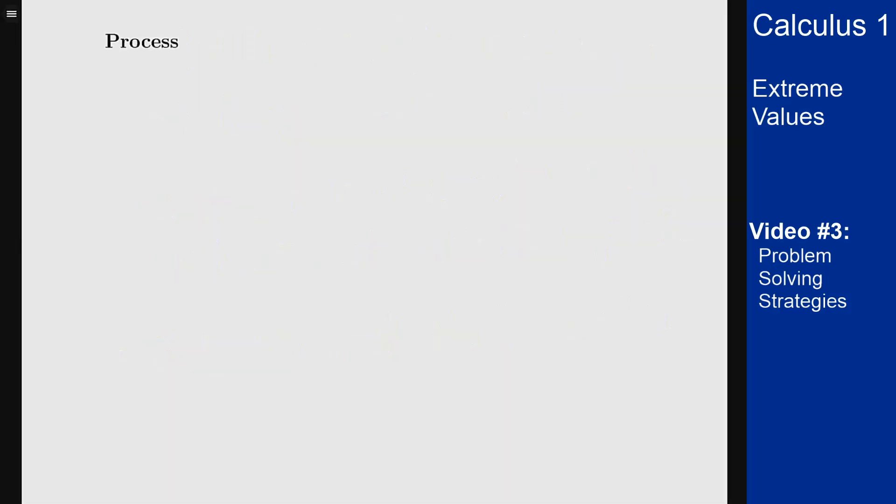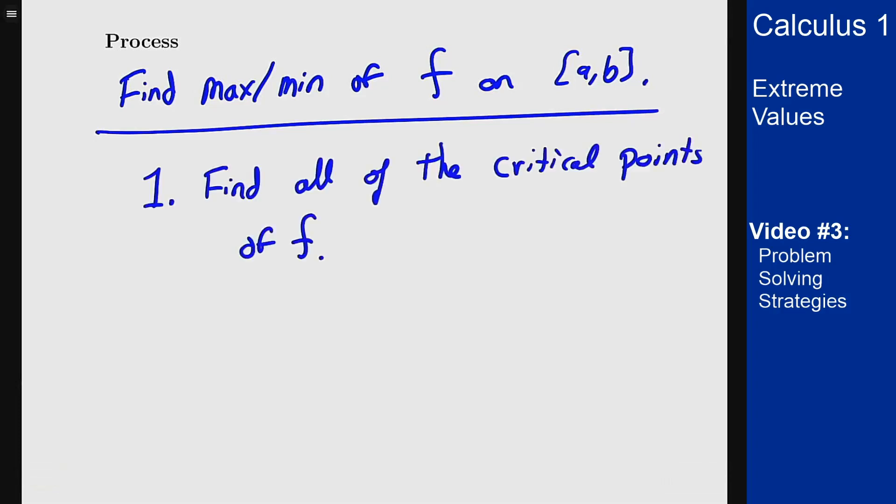What does this process look like? Our first step is to find all the critical points of f. What that does is give us a list of possible points that could be the max or min if that maximum occurs inside the interval.